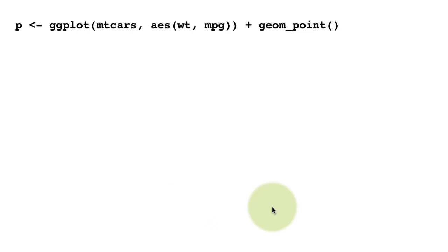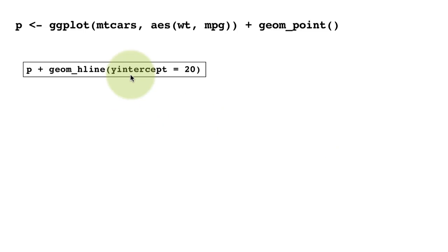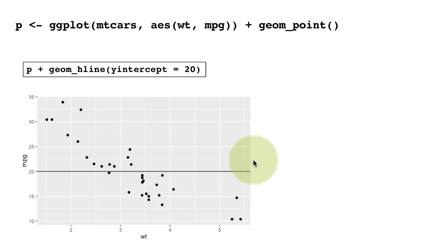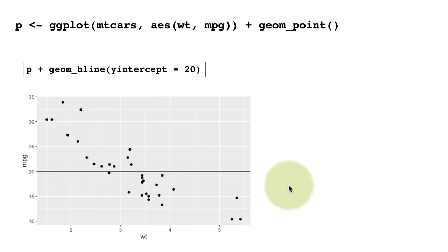We consider the same scatter plot assigned to variable p, then draw a horizontal line using geom_hline. Because it's a horizontal line it has an intercept on the y-axis, and we set y-intercept equals 20, giving us that horizontal line. This is nearly identical to what we looked at with geom_vline.